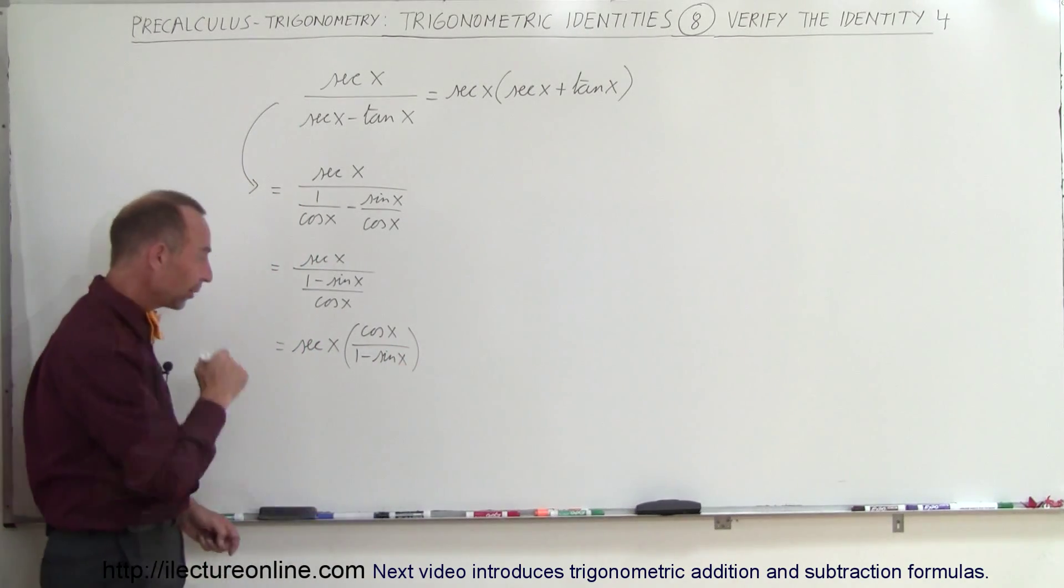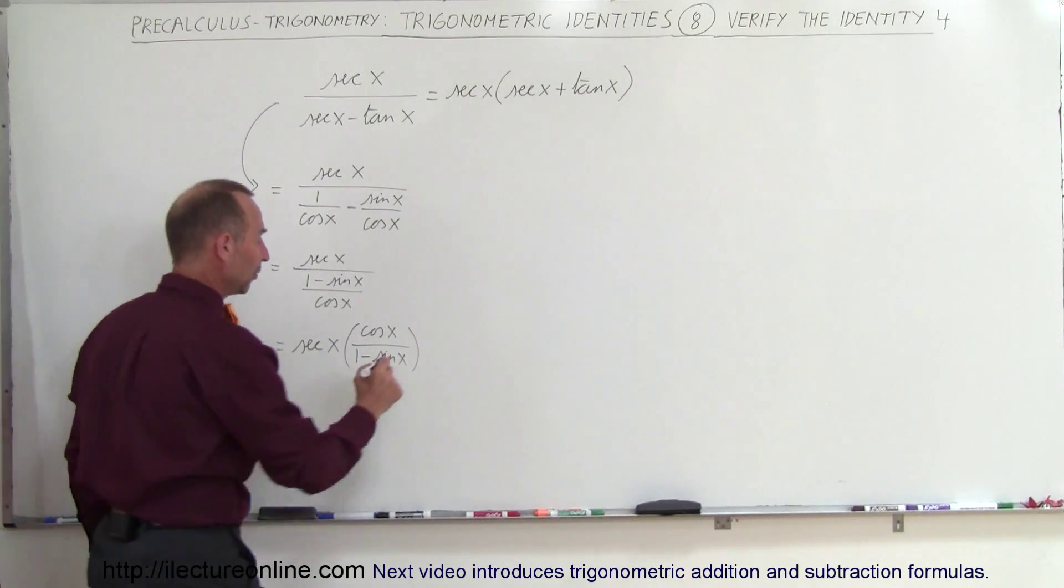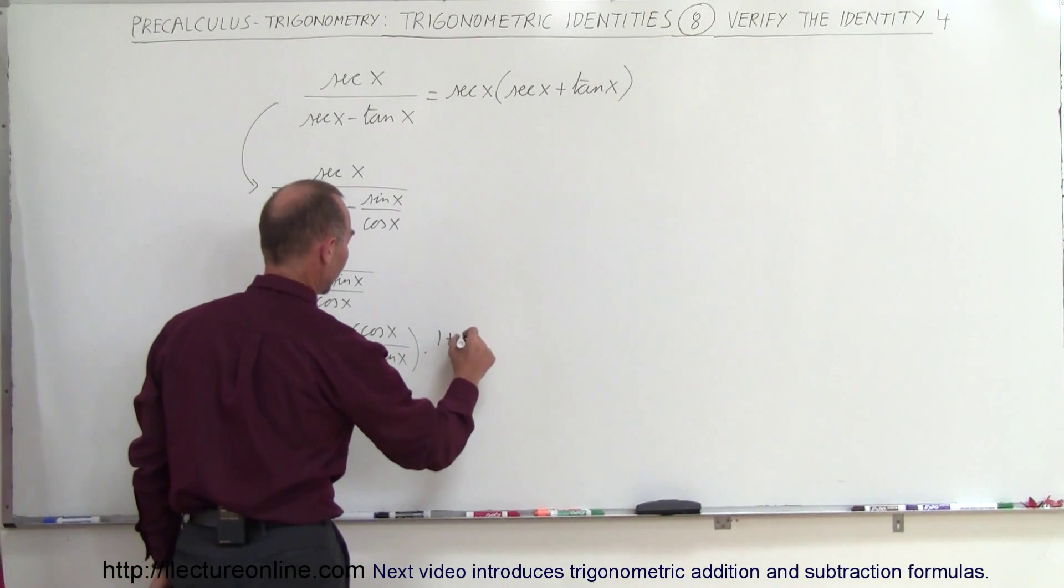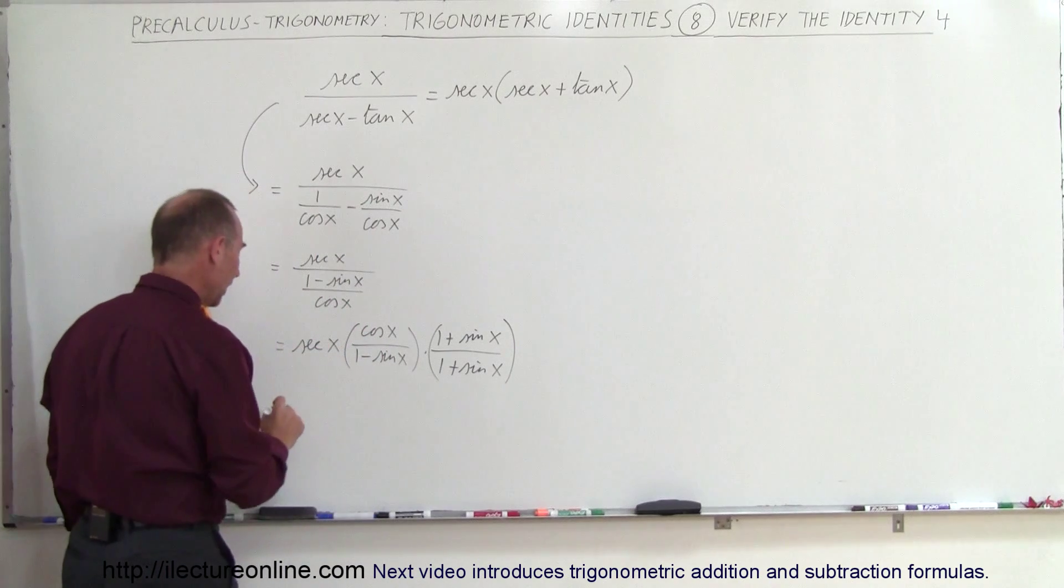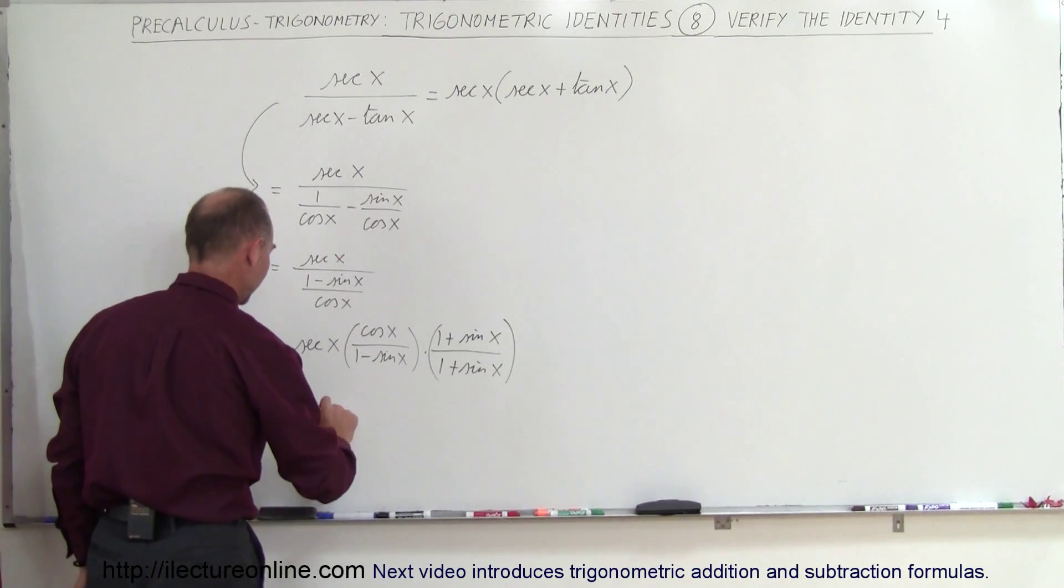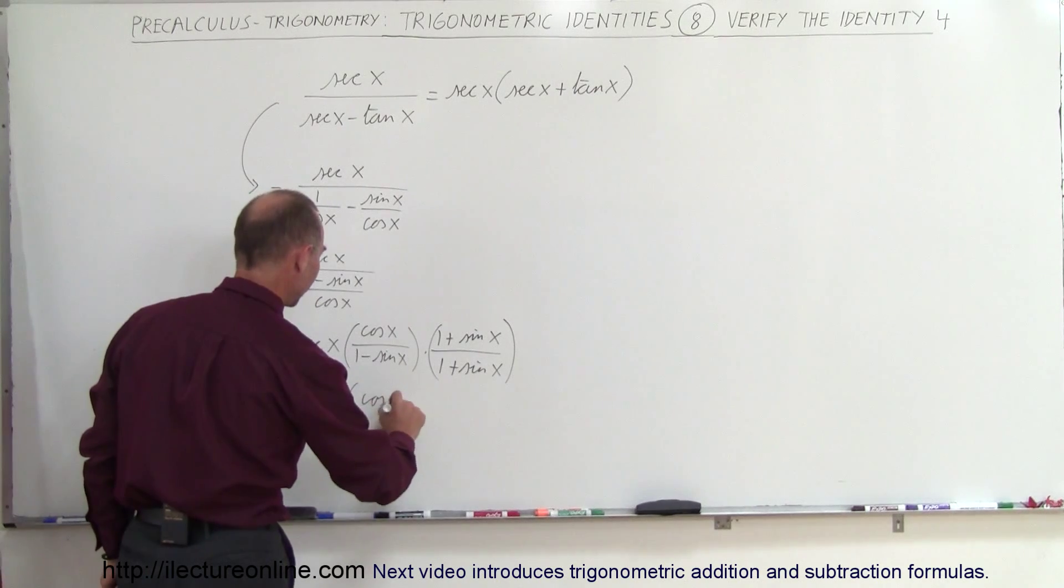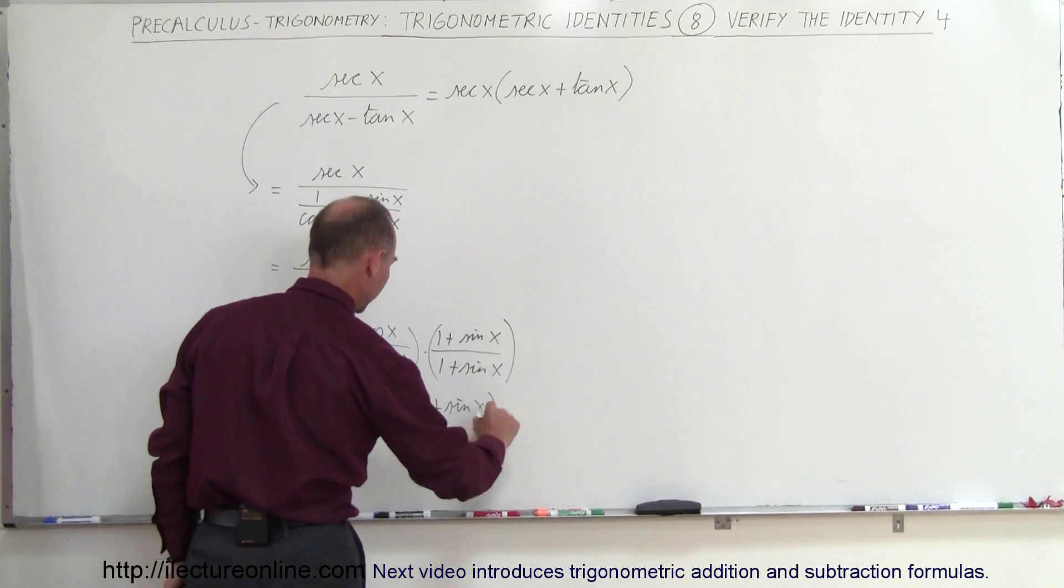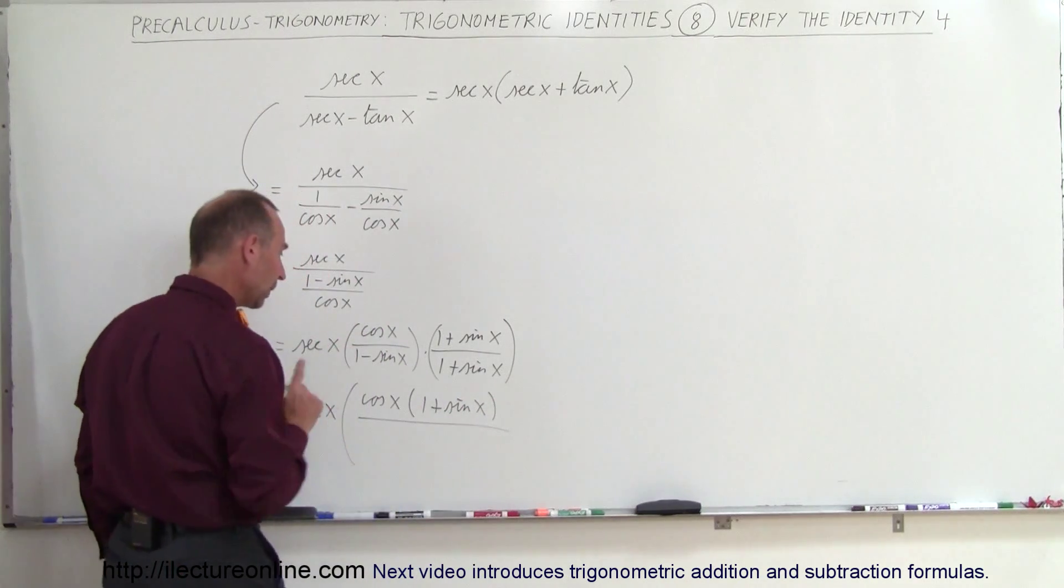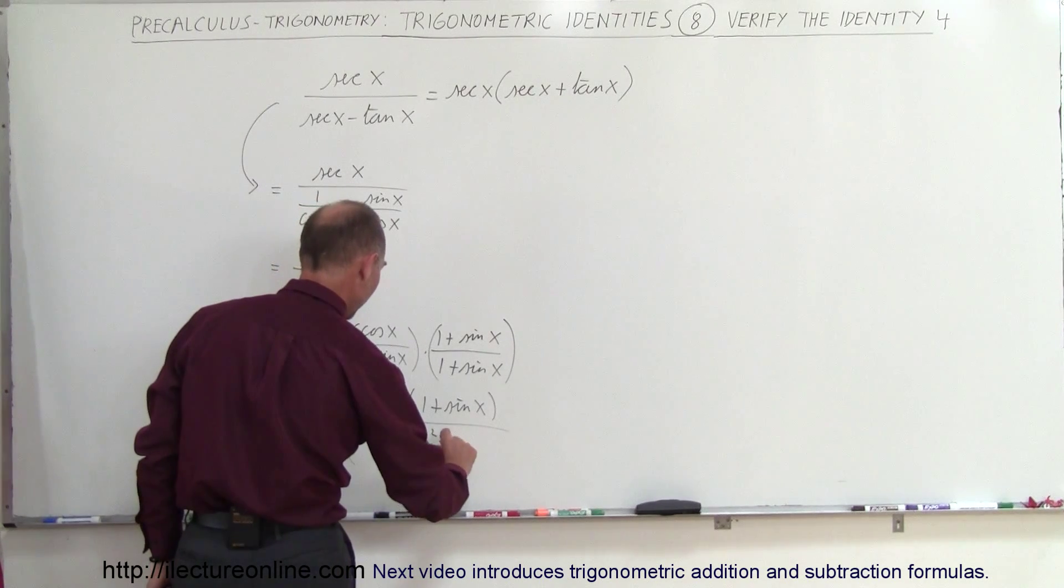All right. So what we're going to do here is multiply the top and the bottom by the conjugate of the denominator. So multiply this times 1 plus the sine of x divided by 1 plus the sine of x. So if we do that, we get the secant of x times in the numerator, we have the cosine of x multiplied times 1 plus the sine of x. And in the denominator, we end up with 1 minus the sine squared of x.